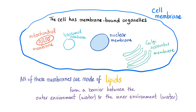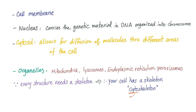The cell membrane contains the cytoplasm and these are the organelles inside of it — these are membrane-bound organelles. That's what makes these cells eukaryotic cells instead of prokaryotes. All of these membranes are made of lipids, especially a lipid bilayer, forming a barrier between the outer aqueous environment and the inner cellular environment, which is also water. The nucleus in the center carries the genetic material in the form of DNA and organizes it into chromosomes.